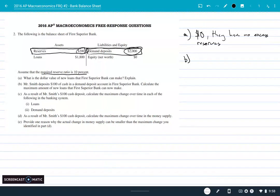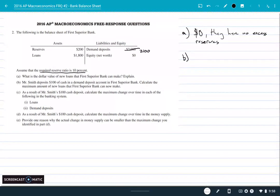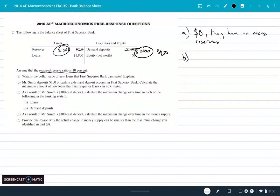Part B: Mr. Smith deposits $100 of new cash. So if you're thinking about what happened here, this is now up to 2100 because that's how much they owe to their customers. Their reserves must now be 300 because they have that cash. So this is our new scenario. Calculate the maximum amount of new loans that First Superior Bank can now make. Well, they're required to have ten percent of this, which would be 210. They have 300.